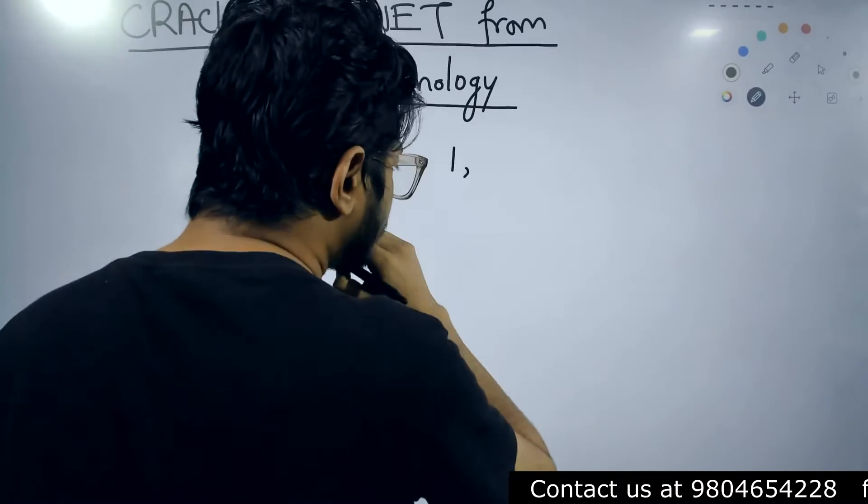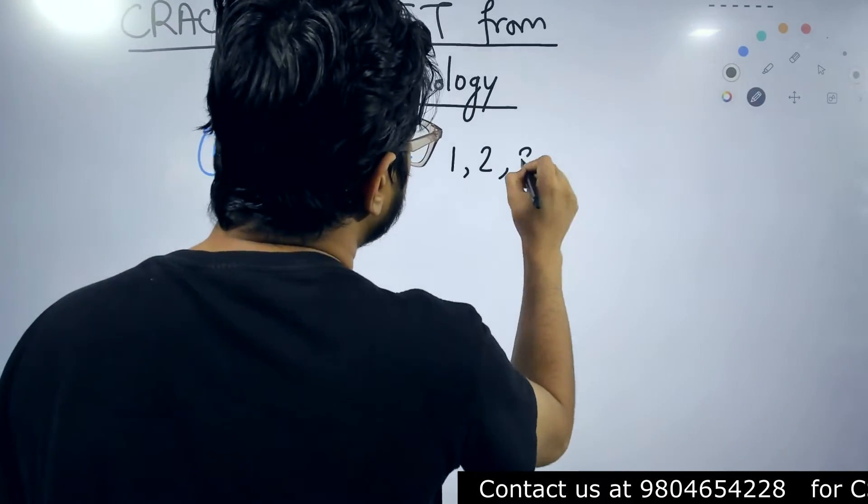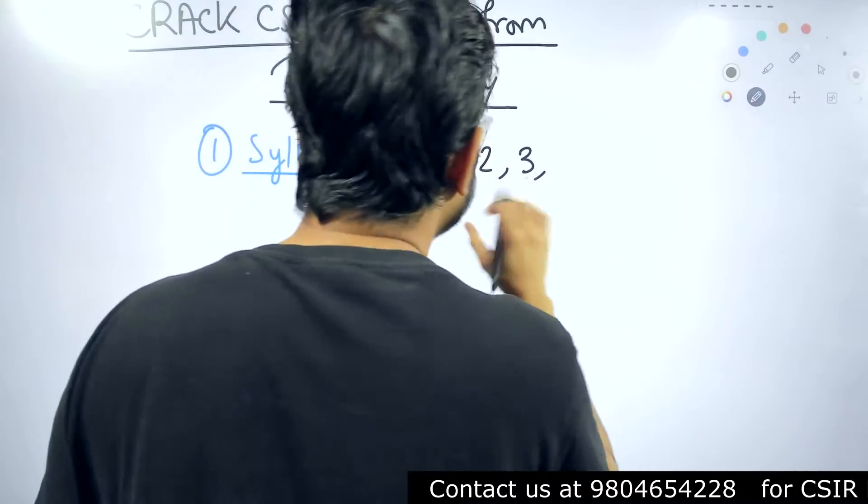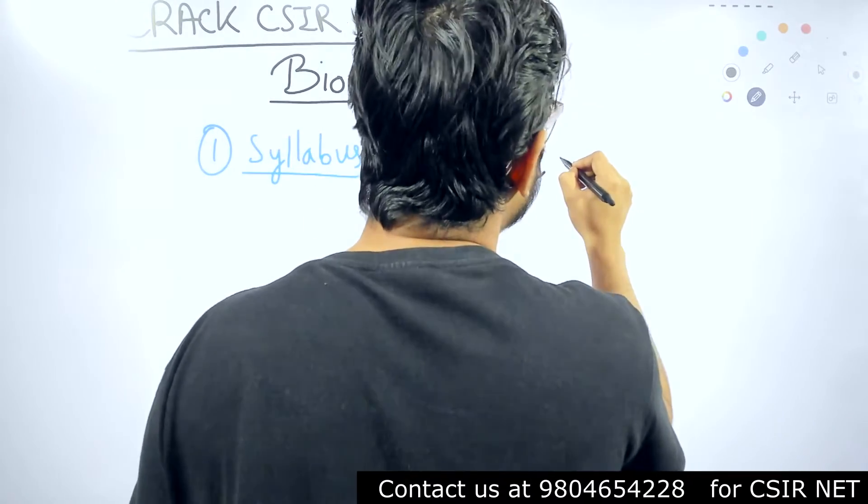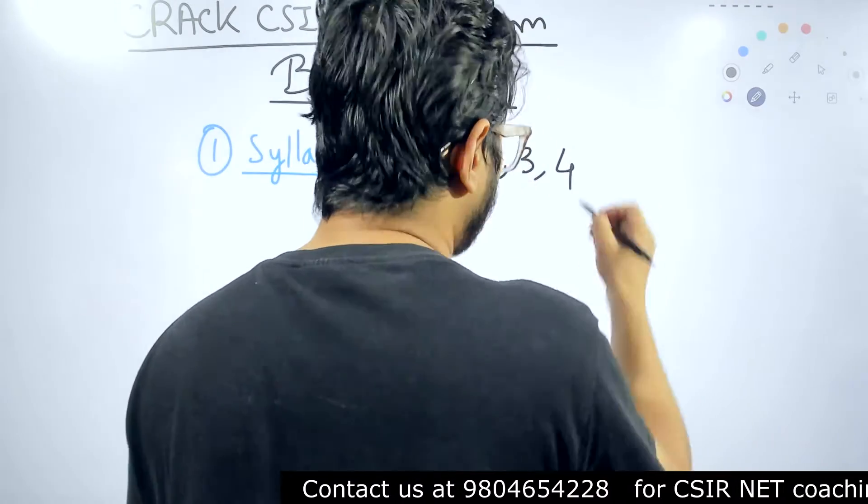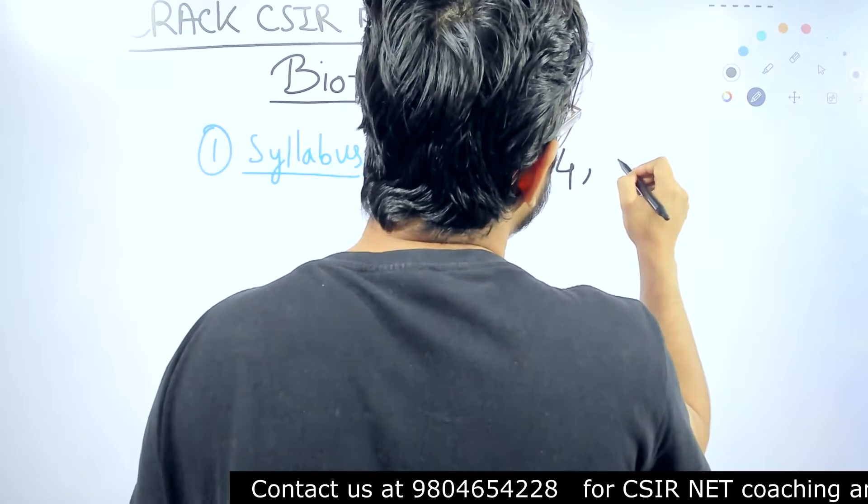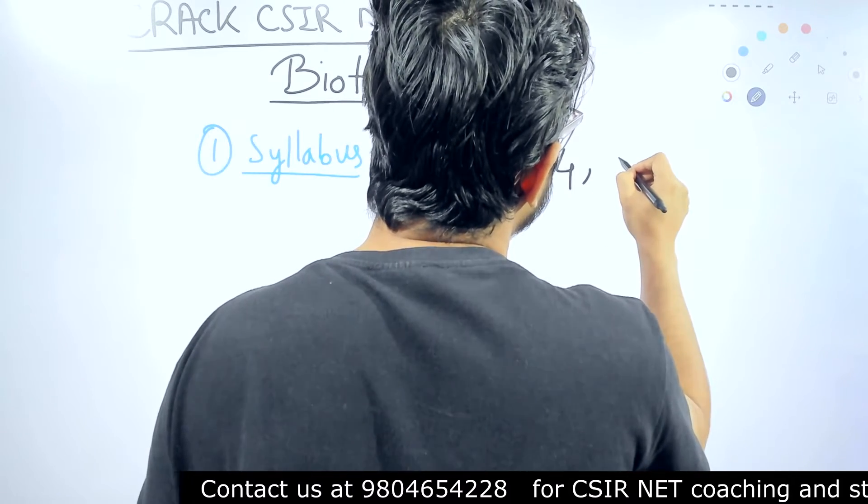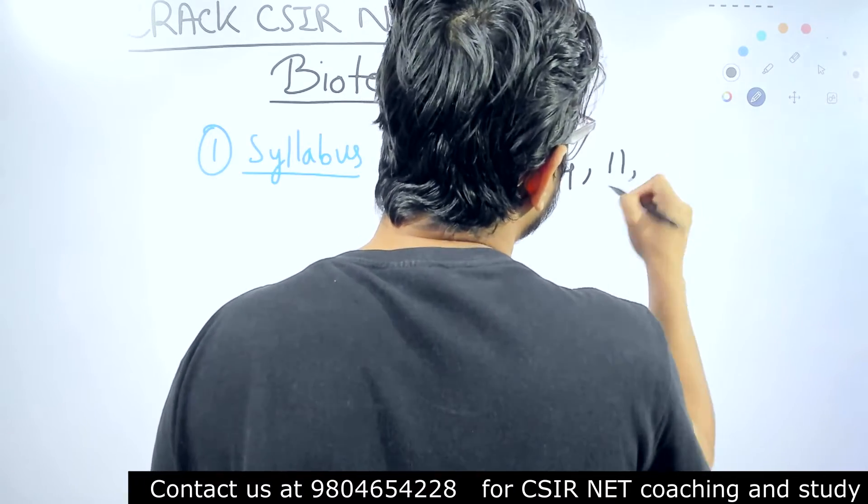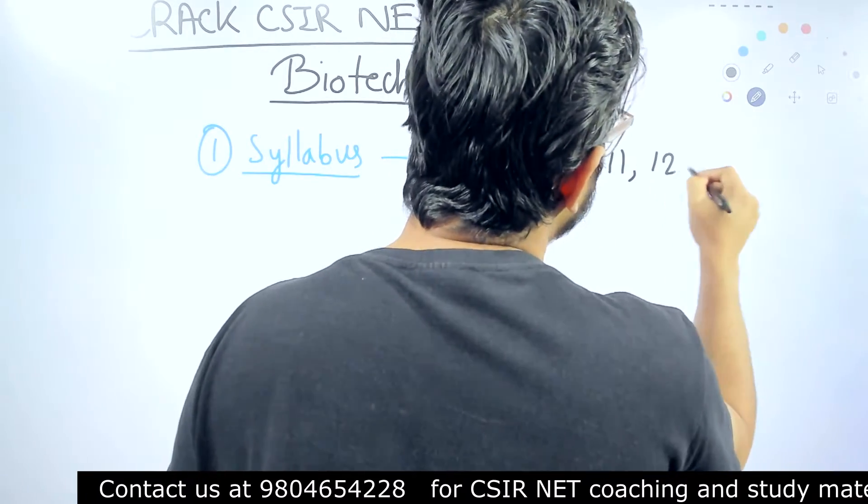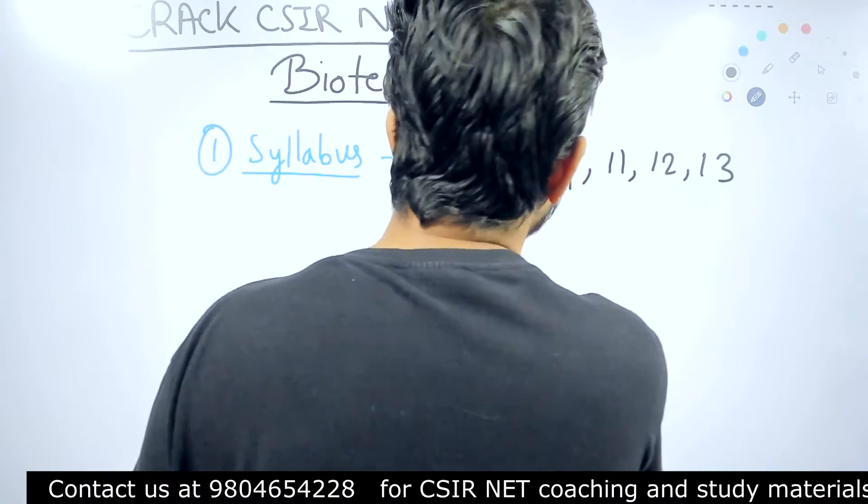Unit 1, biochemistry. Unit 2, cell biology. Unit 3, molecular biology are similar. Then you need a part of unit 4, that is immunology, which is also there. Then obviously, we have unit 11, a portion of unit 11, we have unit 12, and you have unit 13. So, these are the units.